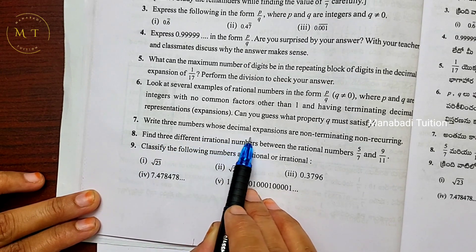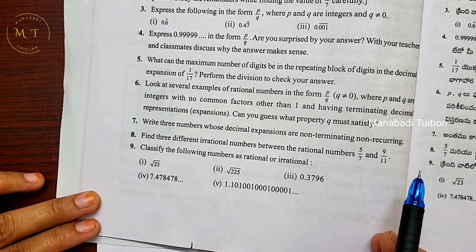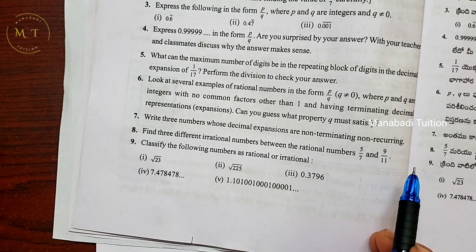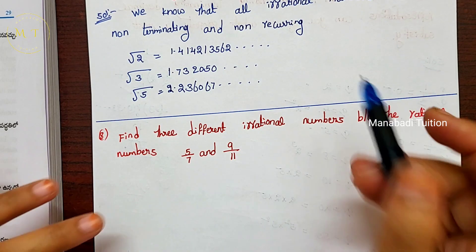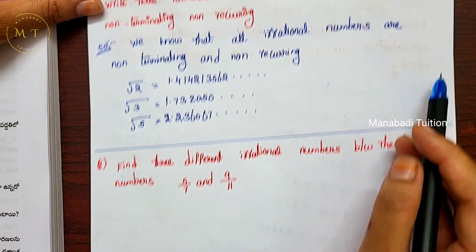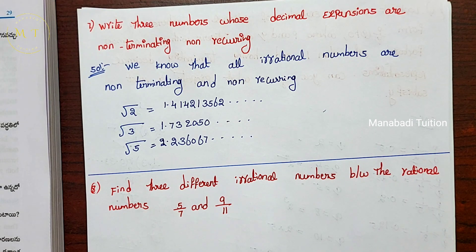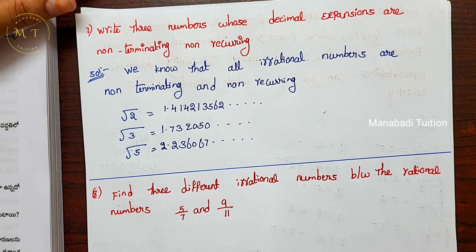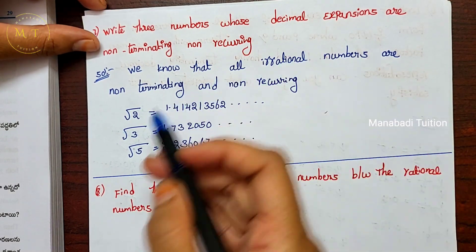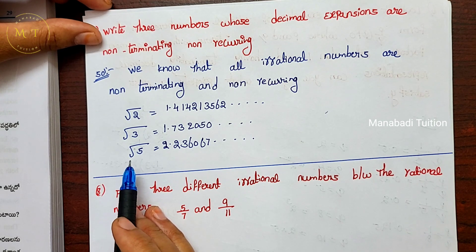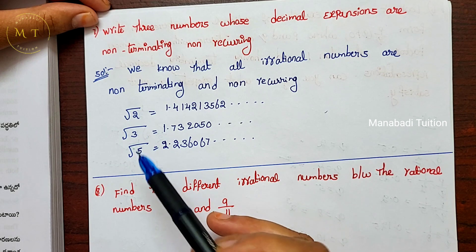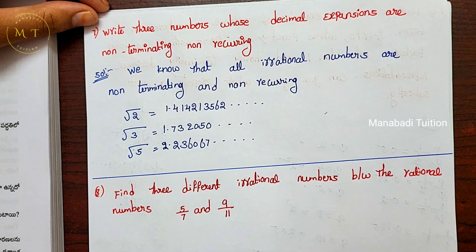Question 7: Write 3 numbers whose decimal expansions are non-terminating and non-recurring. Non-terminating and non-recurring numbers are irrational numbers. Examples: √3, √5, and √7.